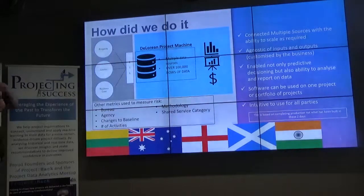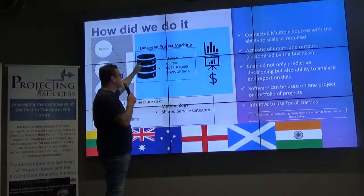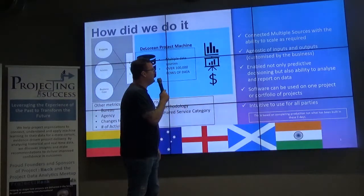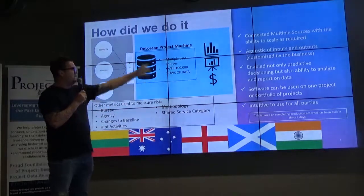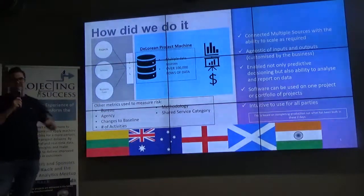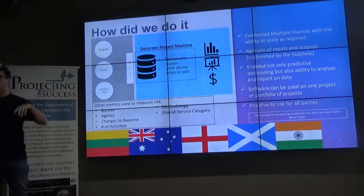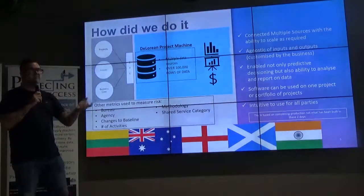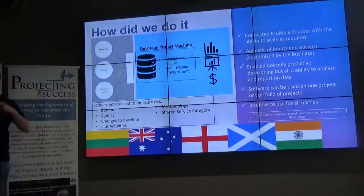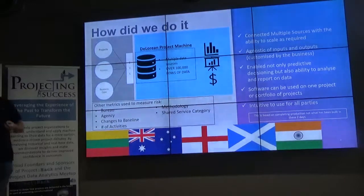So how did we do it? We've got a lot of project data from lots of different sources. We've got it into the ETL — this isn't built yet — into the DeLorean project machine so we can tell the future. It's using multiple data sources, hundreds of thousands of rows of data, that will allow us to do reporting, analytics, and obviously save money for the business. All these features are future-proofed and agnostic of inputs and outputs, so we can do it over multiple inputs. For example, the data had bureau information, but if that didn't exist in a different business, we could use cost centre information or other data points — our tool is customisable depending on the business we're serving. It's enabled not only predictive decisioning but also the ability to analyse and report on data.